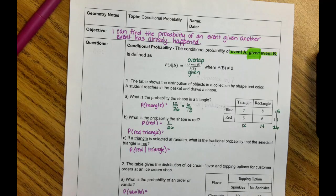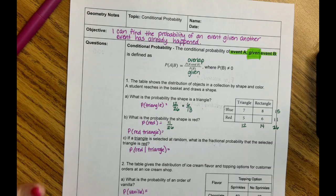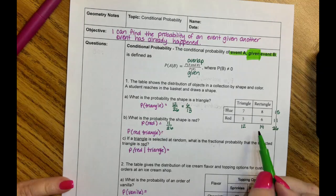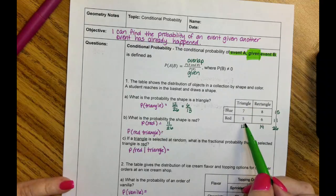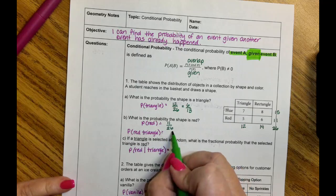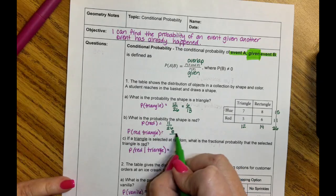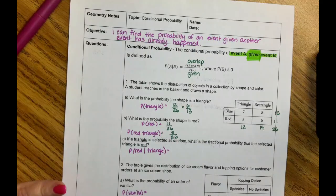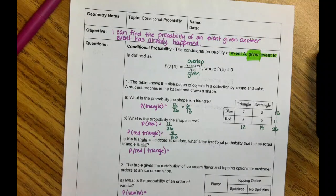Now what's the probability that it's a red triangle? Everything is still in the bag and I want a red triangle. Well, there are five red triangles in the bag and 26 shapes in the bag. So the probability of drawing a red triangle is 5 over 26.